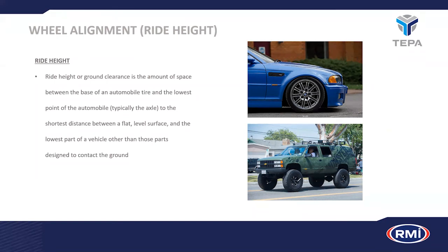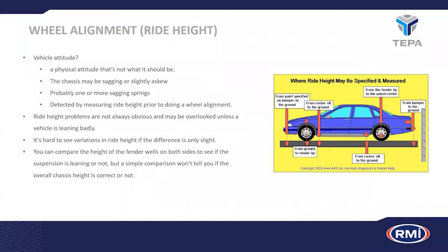An increased ride height should generally be accompanied by an improved or increased brake system to compensate for the load transfer under braking. Vehicle ride height relates to vehicle attitude — whether it's hanging left or right, or nose down. We often saw older Nissan bakkies with a serious nose-down attitude. Incorrect ride height is not always obvious and may not be visible to the naked eye — it needs to be measured and checked against the vehicle's specifications.